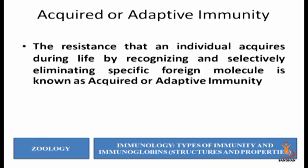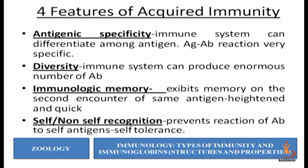What are the features of acquired immunity? First, acquired immunity is specific to the antigen — it is not general, it is very antigen specific. The immune system can differentiate between two antigens; antigen-antibody reactions are very specific. If we are exposed to antigen A, our immune system develops immunity against antigen A only. The immunity developed against A will not be applicable to antigen B.